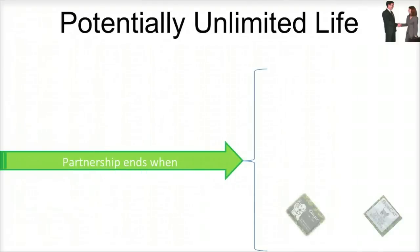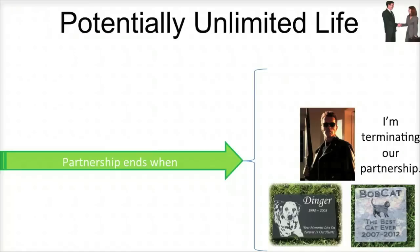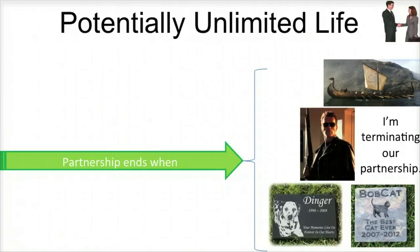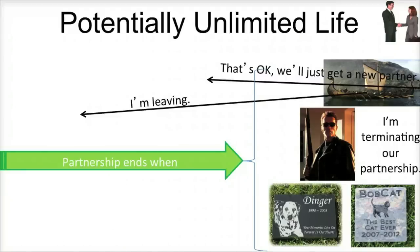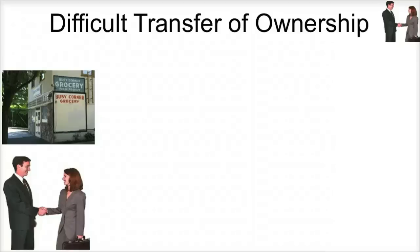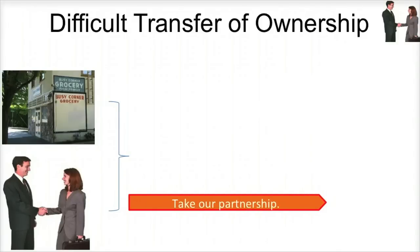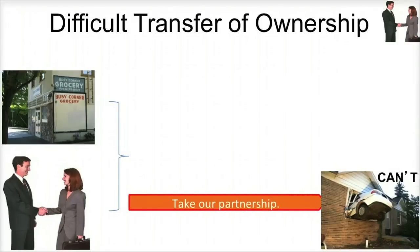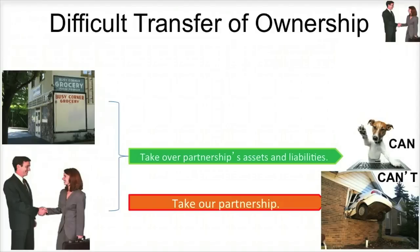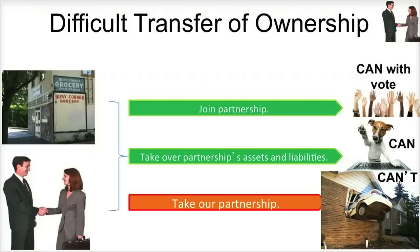Potentially Unlimited Life. Although partnerships theoretically have a limited life which could end upon the death of, termination by, or withdrawal of a partner, it is not uncommon for partnerships to last much longer than any one of the original founding partners, because as one partner leaves — voluntarily or otherwise — new partners can be admitted in their place. Difficult Transfer of Ownership. As with sole proprietorships, someone cannot simply take over the partnership, but rather they can purchase the assets and liabilities of the partnership, or they can become a new partner when the other partners agree to it, which agreement is not always easy to receive.